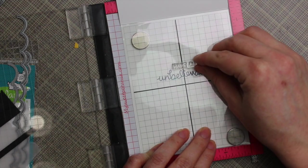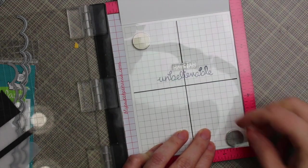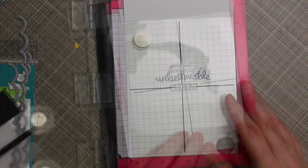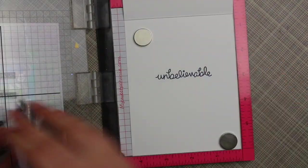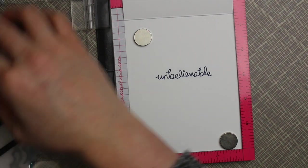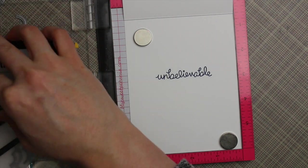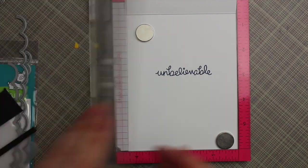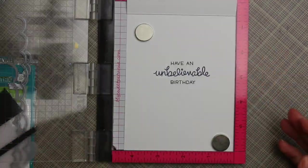And then I lined up the have an and birthday stamps and this little grid sheet, I'll have a link to it in the supplies. And I just use that to make sure I've got everything lined up. It just saves me so much time and effort. And once I had those lined up, I'm going to ink those up with the same intense black ink that I used on the images.